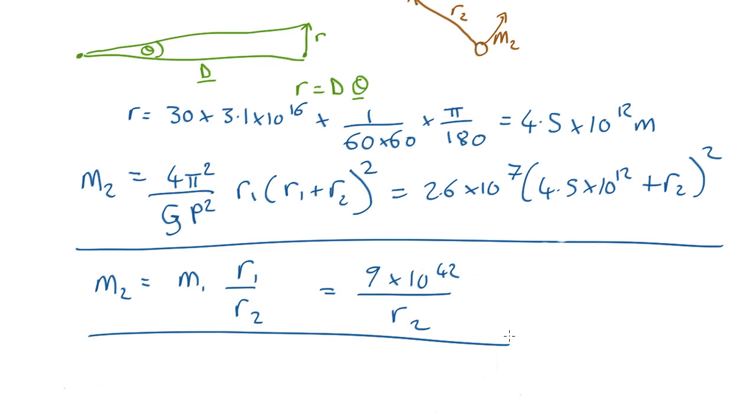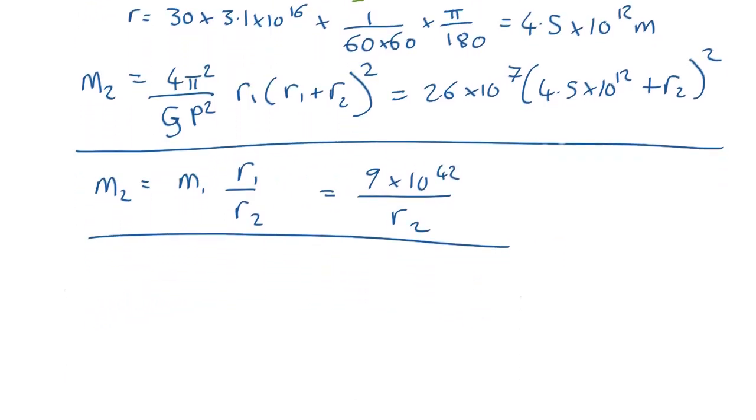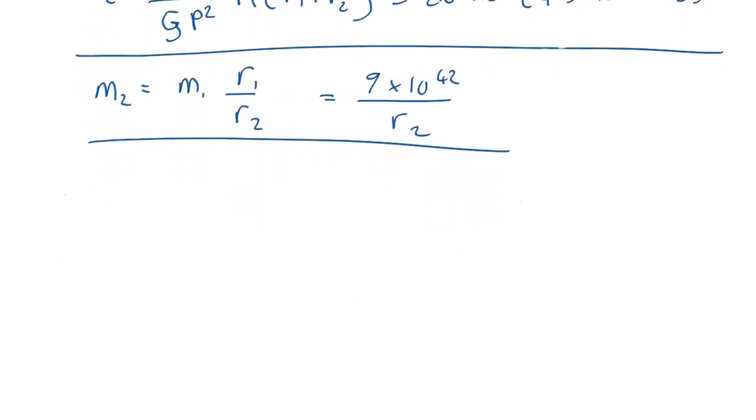So this again is an equation we can't solve by itself because we don't know either the mass or the orbital radius of the mysterious object. But now we have two equations, this one up here and this one down there, in two unknowns. We can in principle substitute one into the other and solve it but that gives us a cubic equation which is messy so let's do it by the trial and error guessing method.